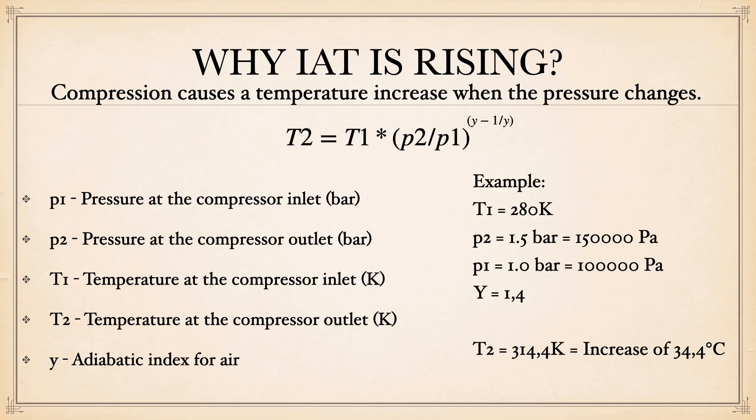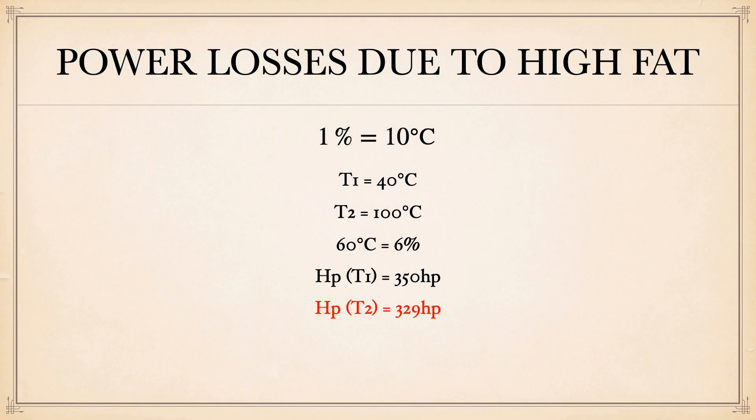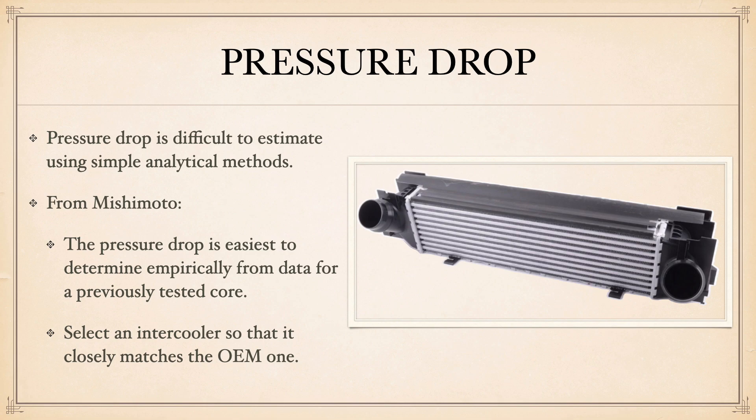We can also estimate how high intake temperature affects power. For every 10°C rise in temperature, we lose about 1% of power. If the starting temperature is 40°C and after compression it reaches 100°C — a rise of 60°C — we lose 6% of power. So if you have 350 horsepower, without cooling you'd only have around 329 horsepower.